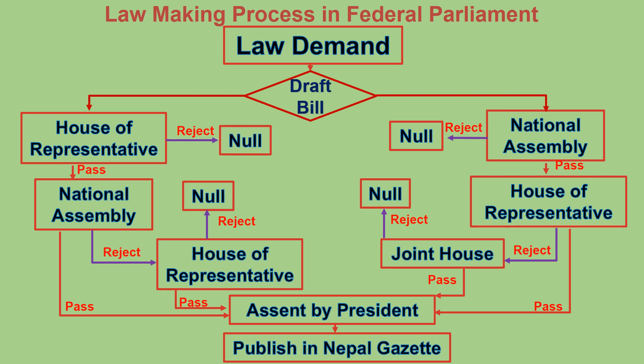But in the case where the National Assembly passes a bill and the House of Representatives rejects it, the bill is presented in a joint house. If the joint house passes the bill, it goes to the President for assent, is published in the Nepal Gazette, and becomes law.